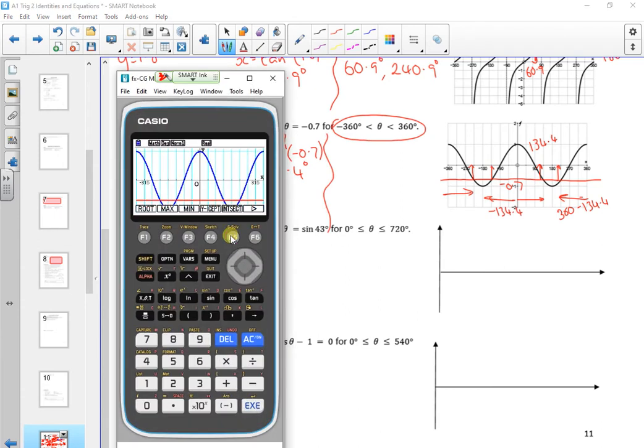Right, so let's have a look then. So G-solve and intercept. So I've got minus 225.7, I reckon, what do I reckon? Yeah, well, no, 6, sorry.